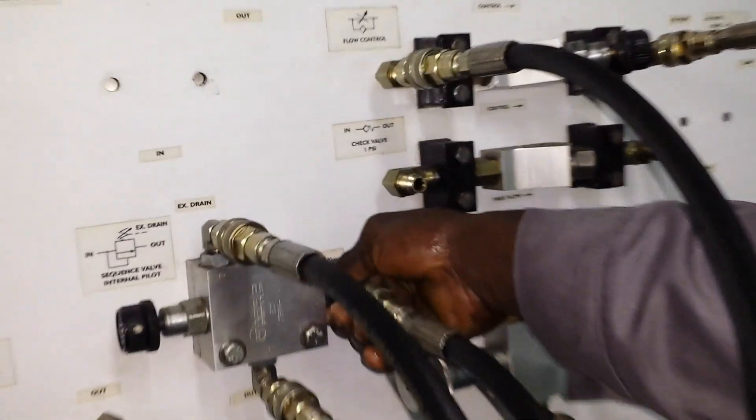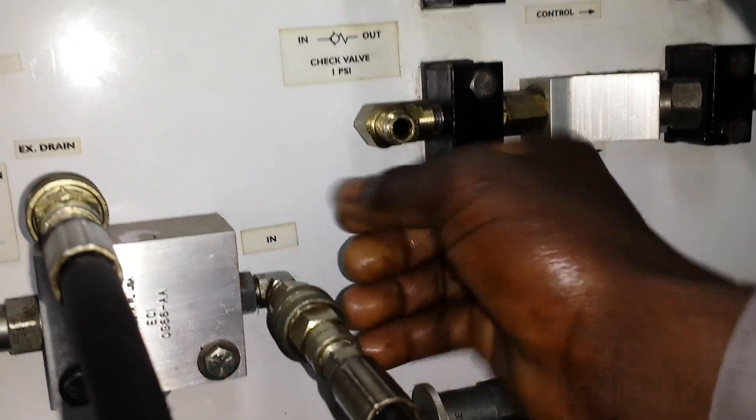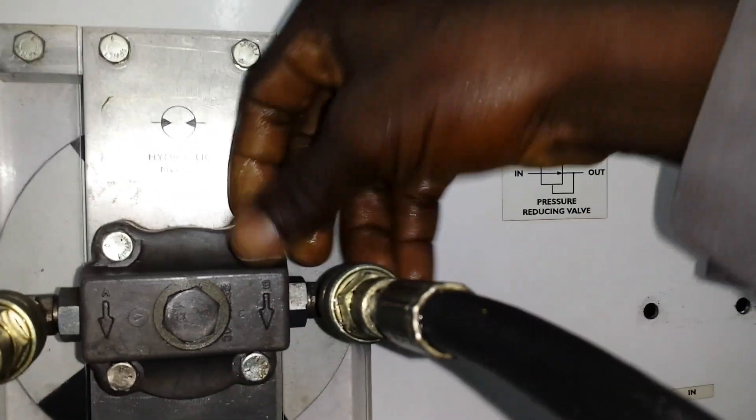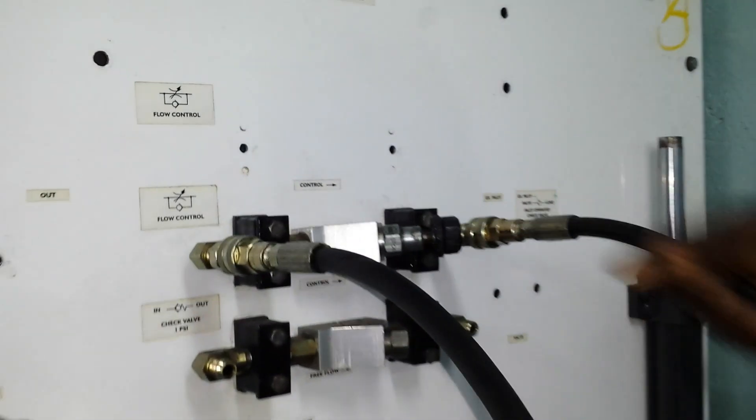The line from the opposite rear end goes to our sequence valve in port. And from the out port, the line comes to the hydraulic motor. And from the hydraulic motor, the line goes to our flow control back to the rear end manifold to the reservoir.